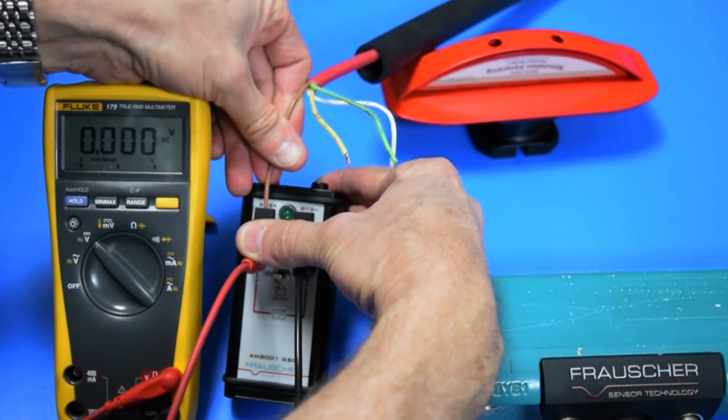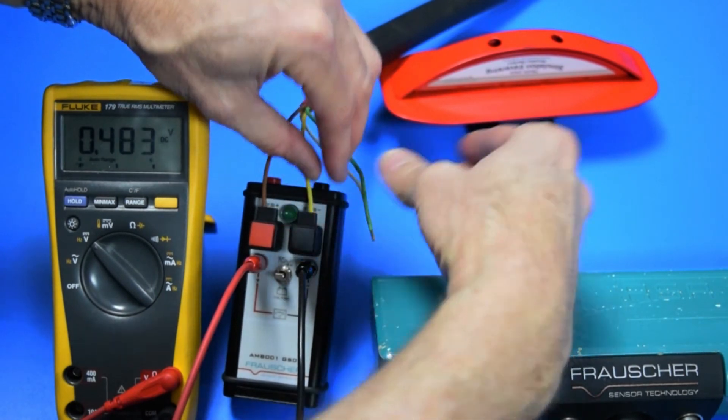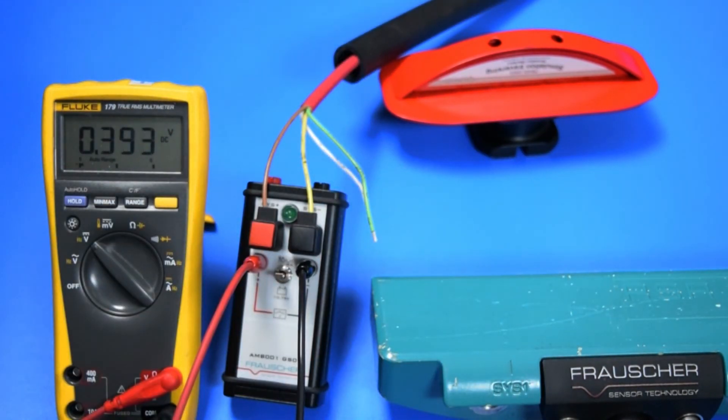Next, attach the transducer wires from sys 1 to the AMB. The brown wire goes into the red sys positive terminal and the yellow wire goes into the black sys negative terminal.